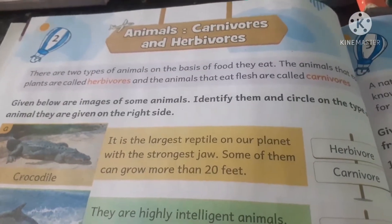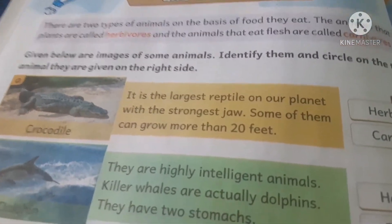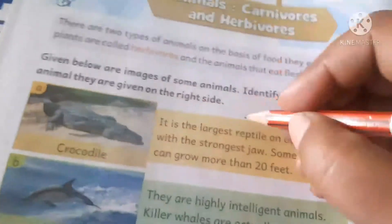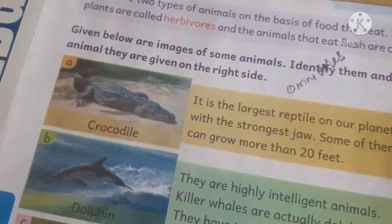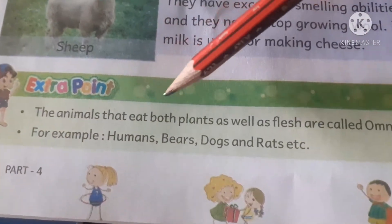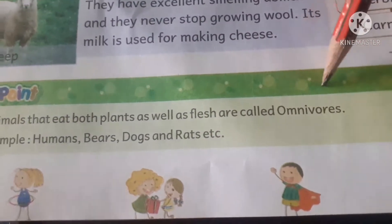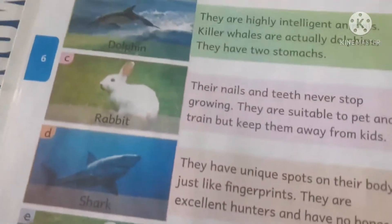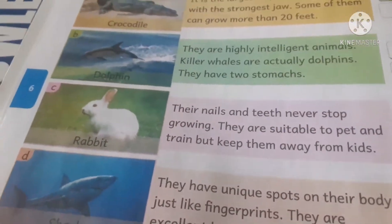The animals that eat the flesh of other animals are called carnivores. And one more category is omnivores — animals that eat both plants as well as flesh. For example, humans, bears, dogs, and rats are examples of omnivores who eat both flesh and green vegetables.